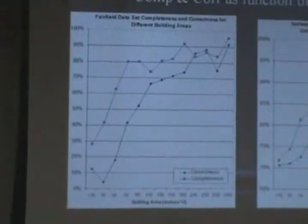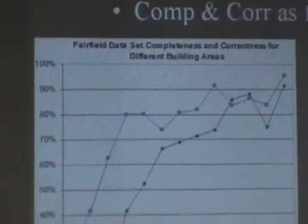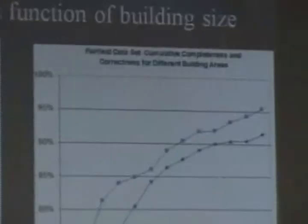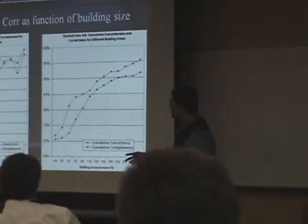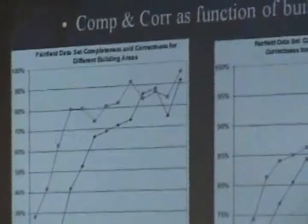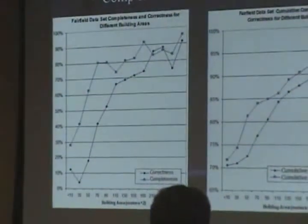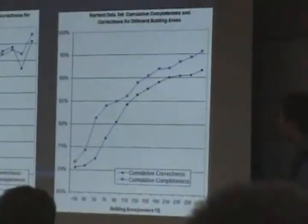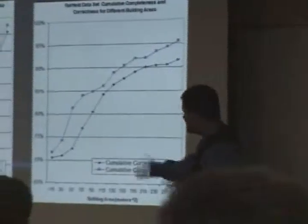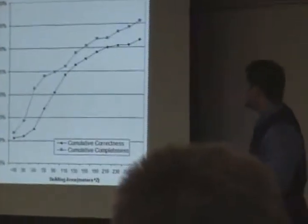Now we present the algorithm's completeness and correctness as a function of building size. There is a kind of transient response — after a certain point, the response is pretty much the same for larger buildings. For buildings with a size between 130 and 190 square meters, we get roughly 70% correctness and 80% completeness. For buildings 150 square meters or greater, we realized a completeness of 93% and a correctness of 87%.